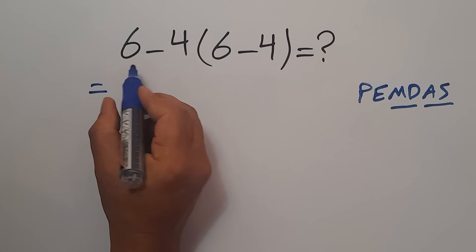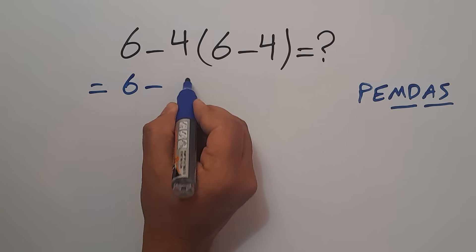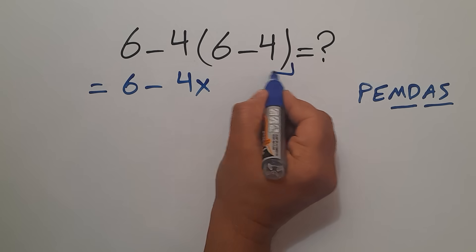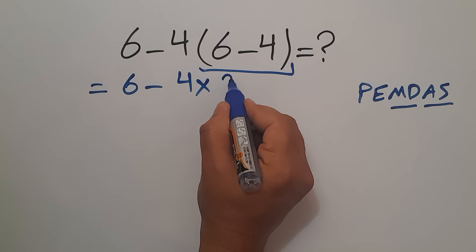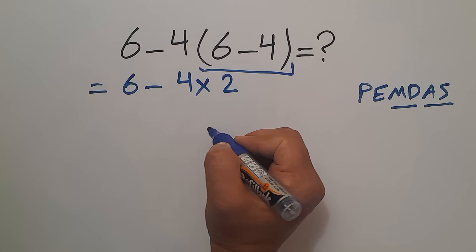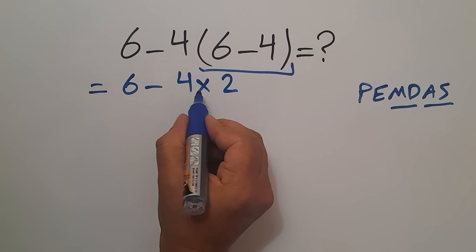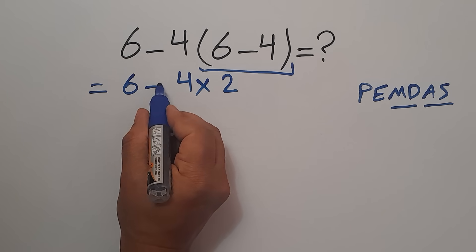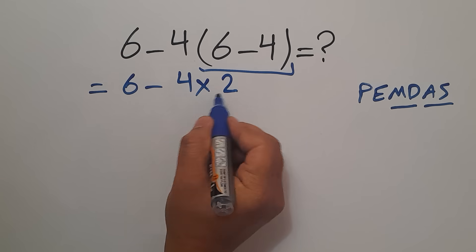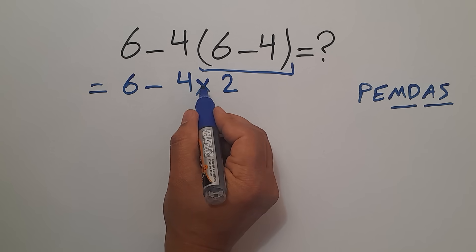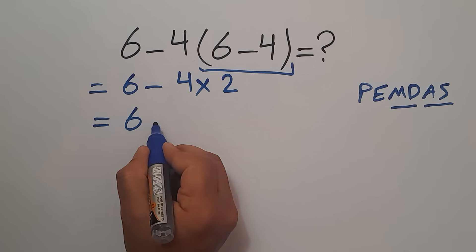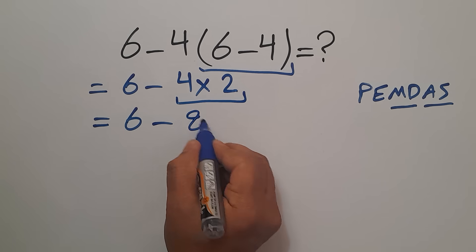So here we have 6 minus 4, and 4 times this parentheses which equals 2. Now according to the PEMDAS, multiplication has higher priority than subtraction, so first this multiplication: 4 times 2 equals 8.